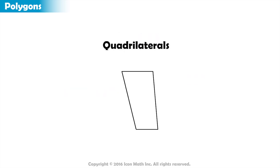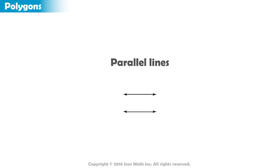Quadrilaterals can be further classified based on certain properties, such as the number of parallel sides they have. Two lines are parallel if the distance between them never changes, which means that they never intersect.